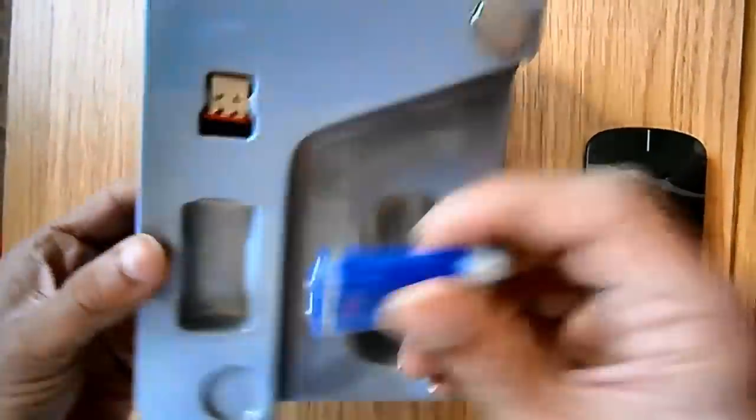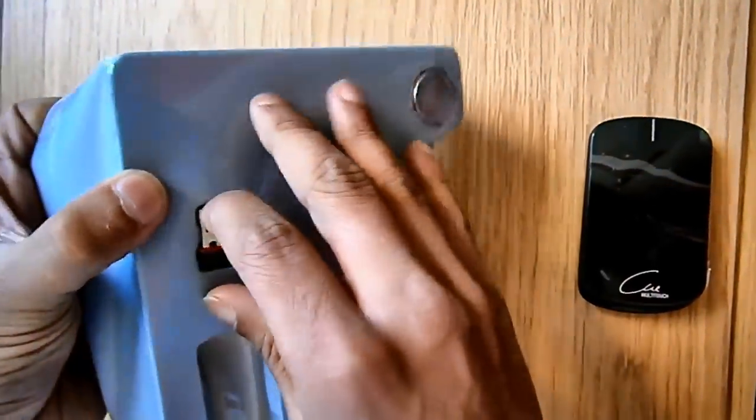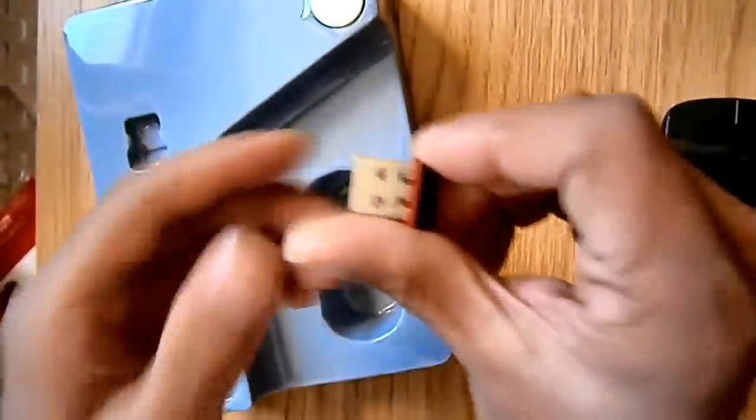As you can see, it's got some batteries, just simple alkaline batteries. And it has a nano receiver. It's really small and also has the logo on it.